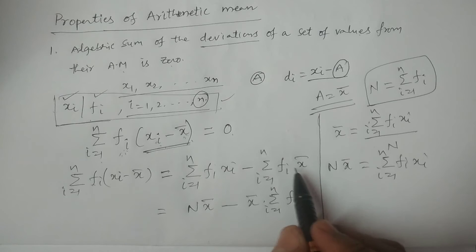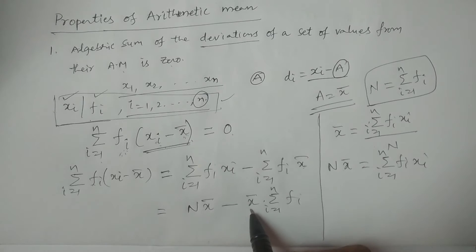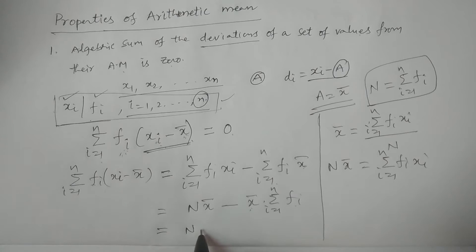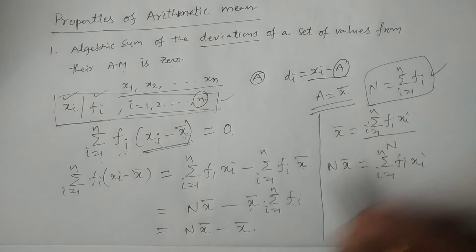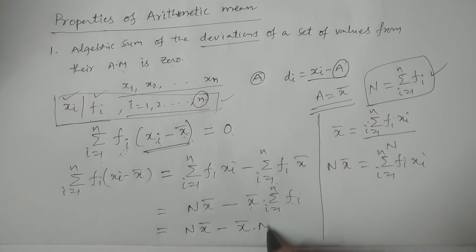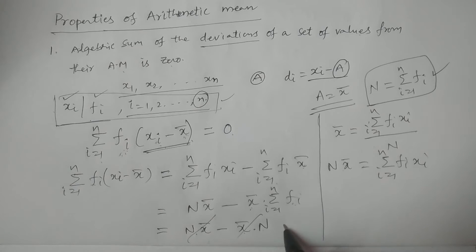x̄ does not depend on summation with respect to i, so it is a constant. I am taking the constant outside: x̄ into summation i equal to 1 to n, fi. So it is nothing but N into x̄ minus x̄ into capital N — since summation fi is capital N. Therefore N into x̄ minus N into x̄ cancel out. It is equal to 0.